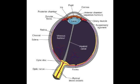You also see the ora serrata and the vitreous chamber, which is part of the posterior segment of the eye. The anterior segment of the eye is made up of the anterior chamber and the posterior chamber. Now we're going to look at the ciliary muscle and the ciliary process, which collectively make up the ciliary body.